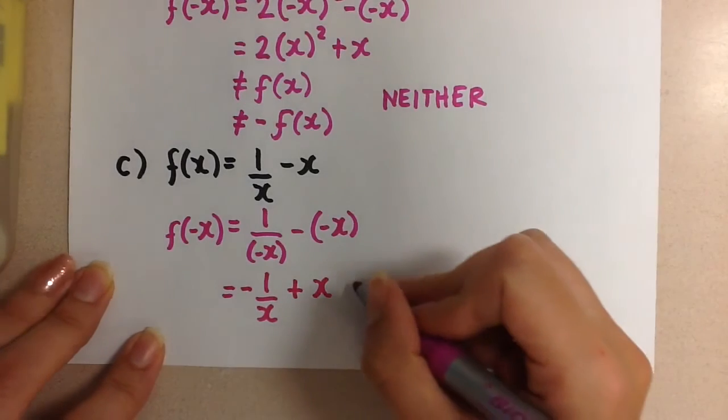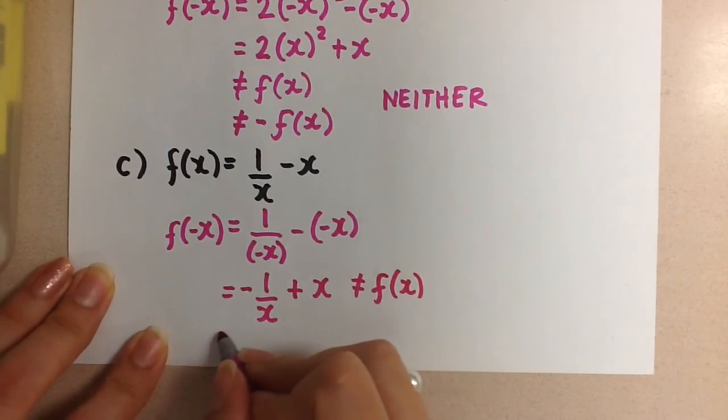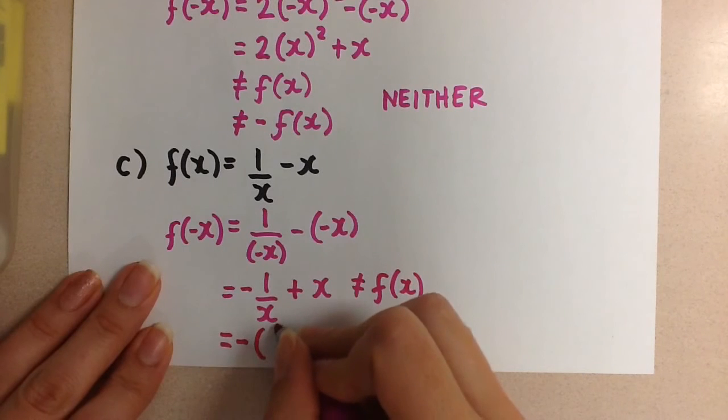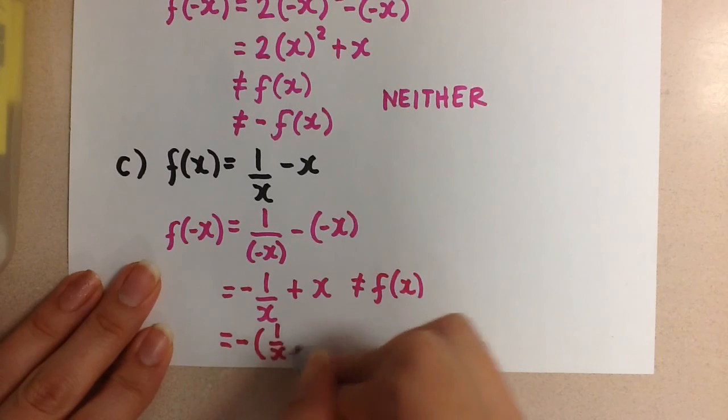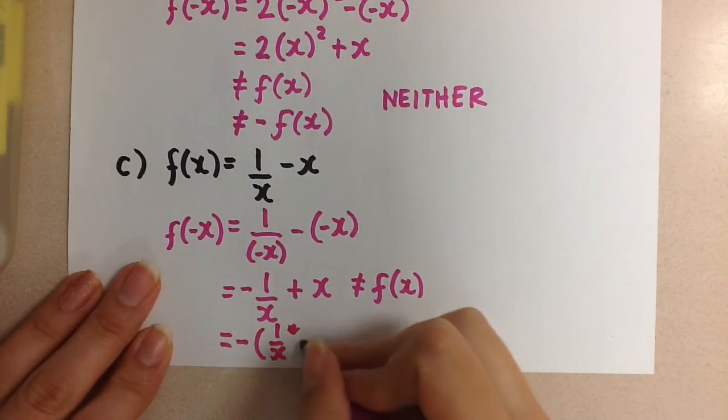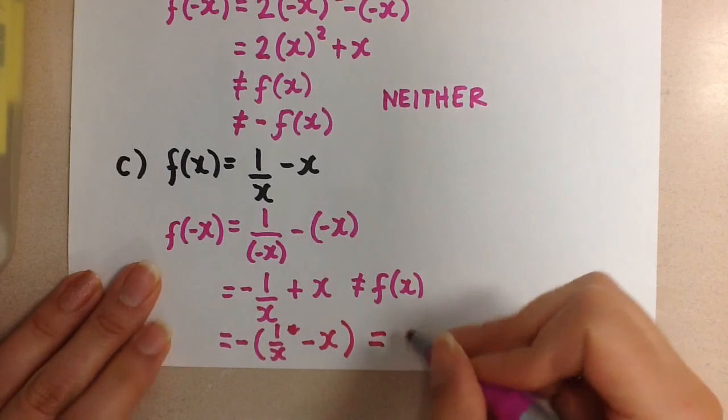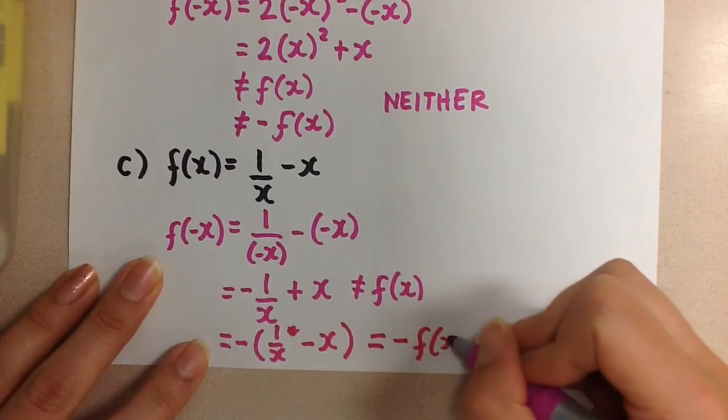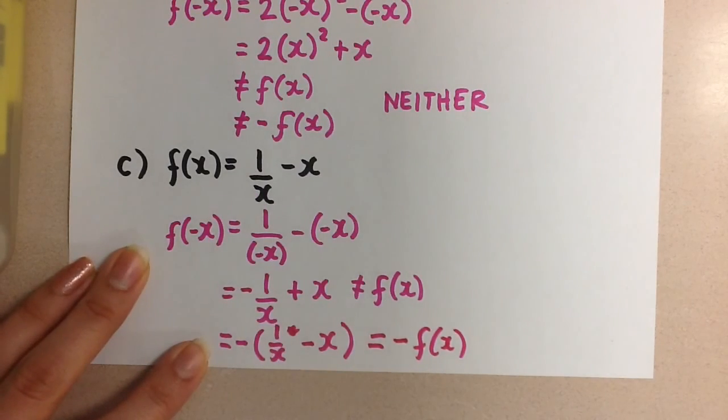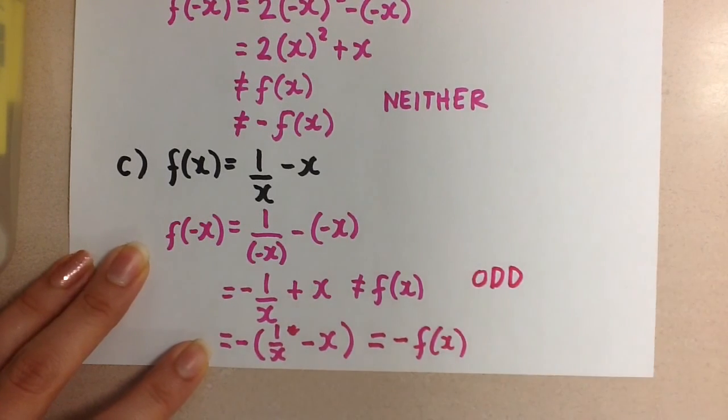Now this is not the same as the original function. However, if I pull out a -1 by factoring out a -1, I am left with -1/x - x. And this is the same thing as -f(x). Meaning it is the negative of the original function here. So we can conclude that this function then is odd by definition.